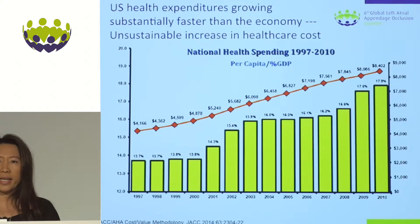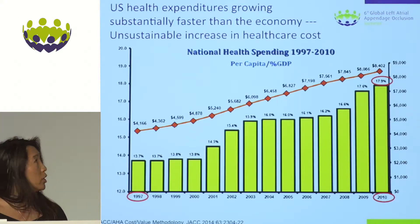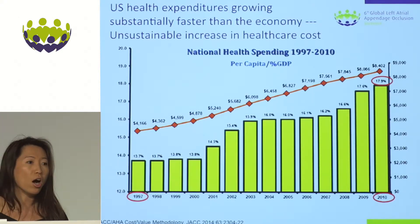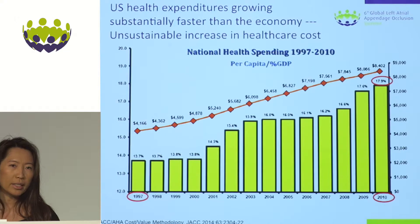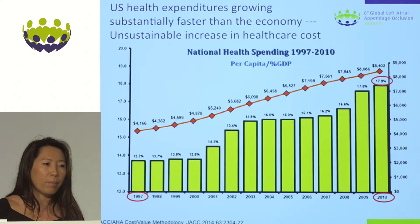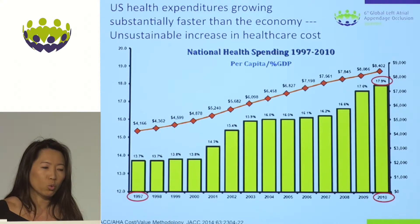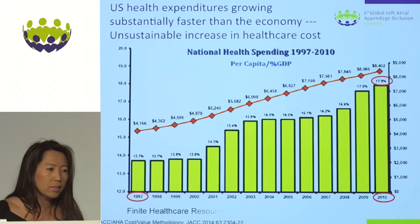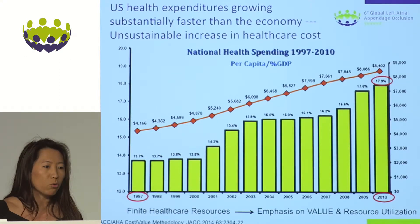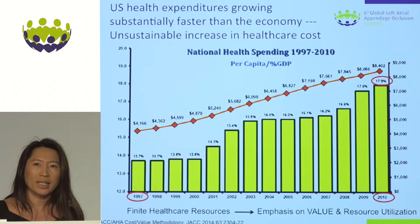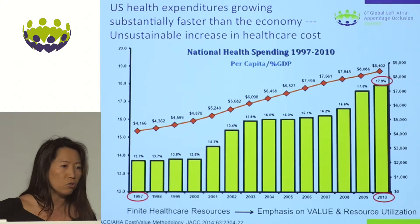In the United States over the past 40 years, health expenditures have really grown substantially faster than the economy. If you look at national health spending from 1997 to 2010, it's actually doubled, representing about 18% of the gross domestic product in 2010. Clearly, this increase in health care costs is not sustainable, and given finite health care resources, there's been greater consideration on value and resource utilization, especially when it comes to new technology.